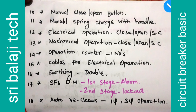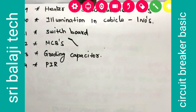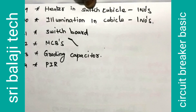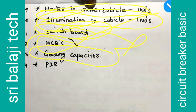We will put a heater in each one. There is heating, lighting, switchboard and the same heat. There is a heating capacitor — there will be a heating capacitor for MCB. We will talk about this grading capacity.